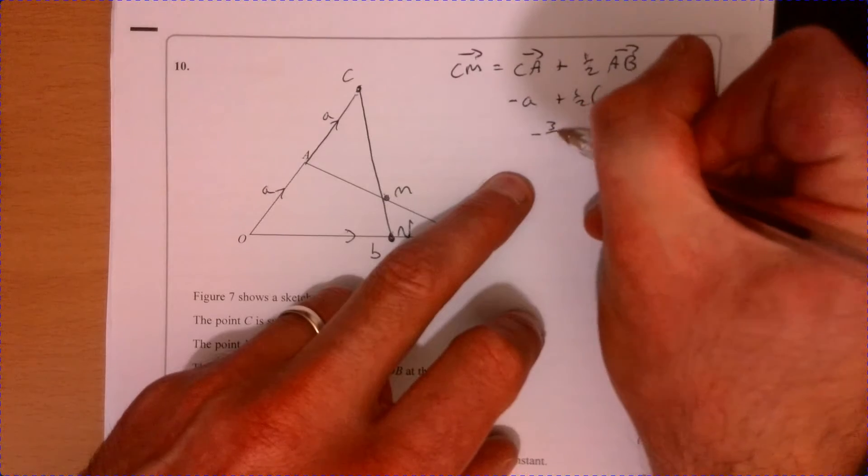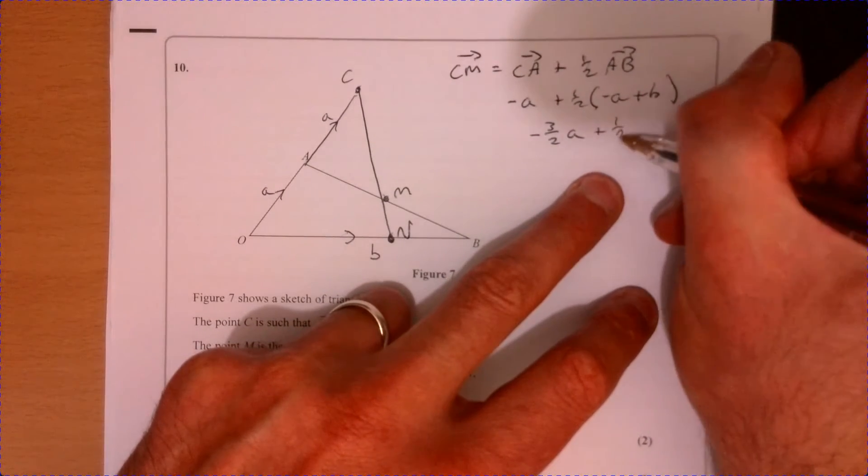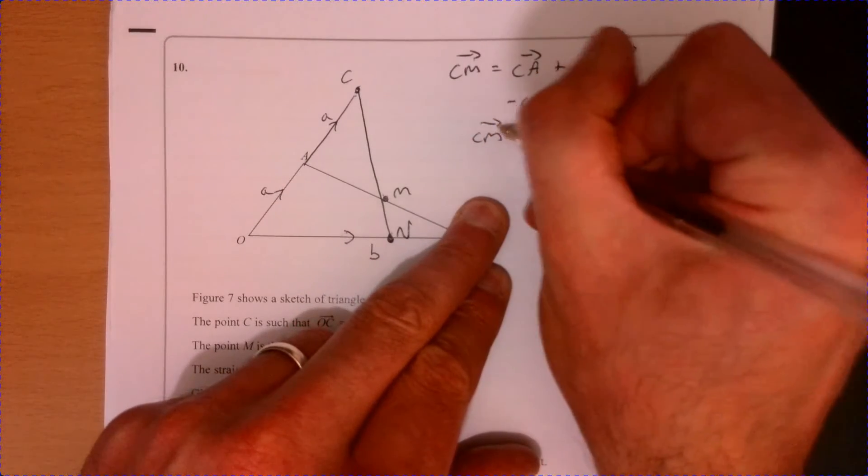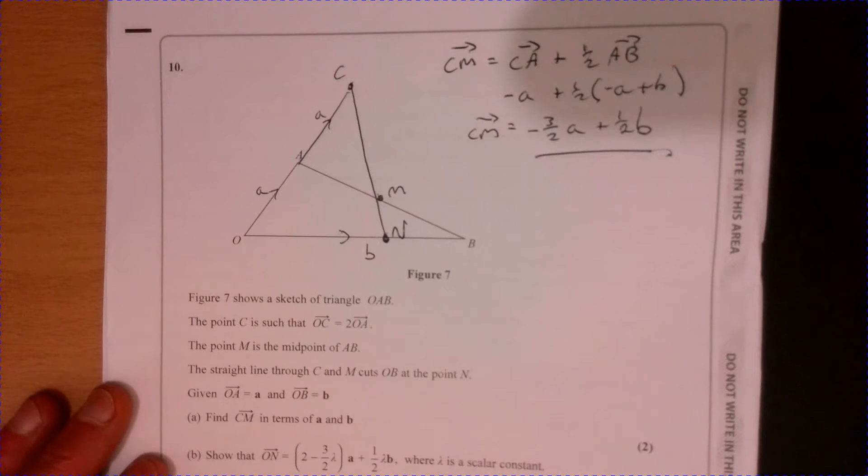Now if we just tidy that up, that's going to give us minus three over two a and plus half b. So that's CM just there.